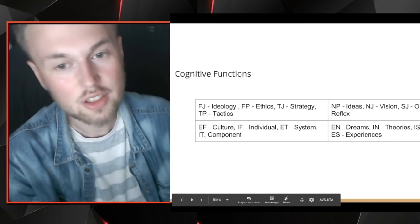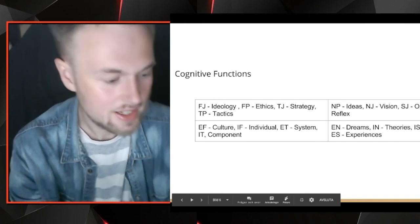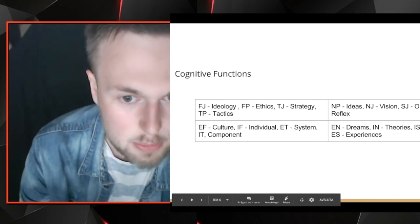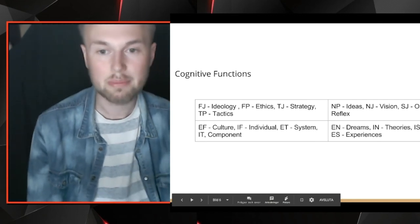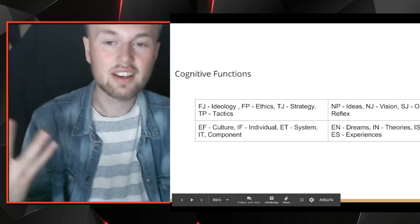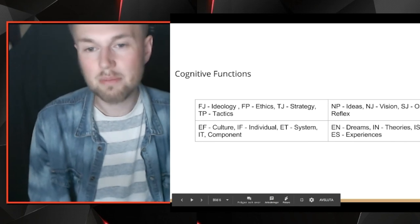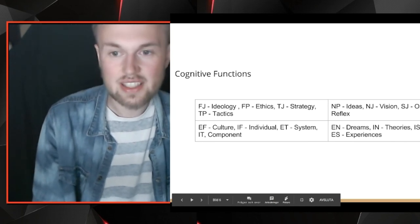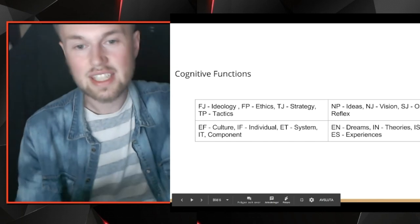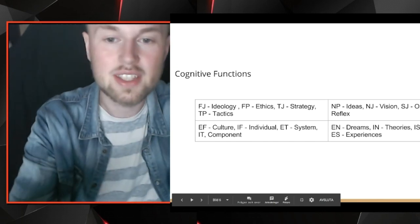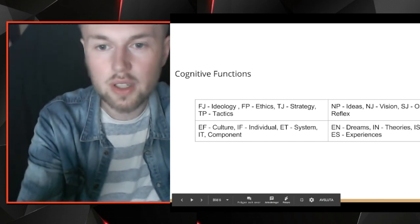Looking at the writer functions — EN, IN, IS, and ES: EN is about what we dream of; IN is about the theory we have about something; IS is about the lesson we've learned from experience; and ES is about a particular experience we've had that we're thinking about.